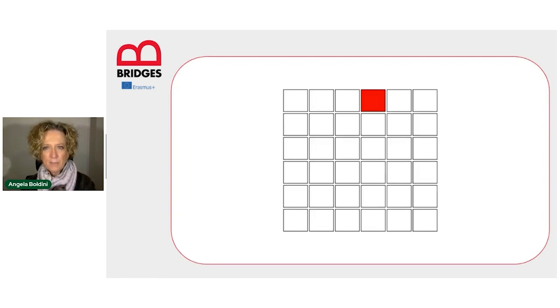Say, for example, we have this series of red squares: 1, 2, 3, 4, 5, and 6. Then we have to repeat the sequence backwards. Not easy, is it?